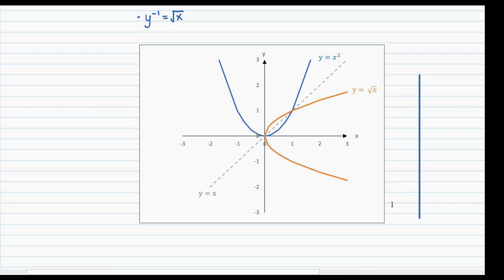From this, we can tell that as things are, the inverse of a parabola — and by extension, the inverse of quadratic functions — cannot be a function. However, there is one thing we can do to make the inverse qualify as a function, and that is by limiting the domain of the function.